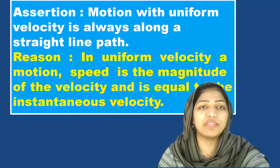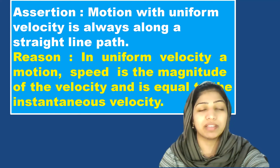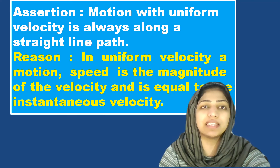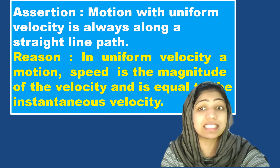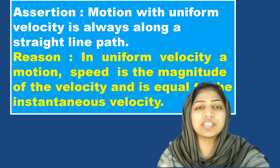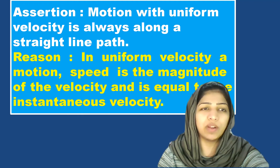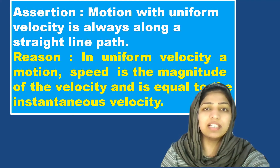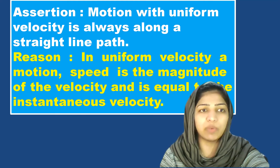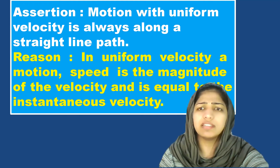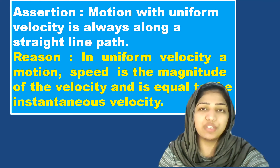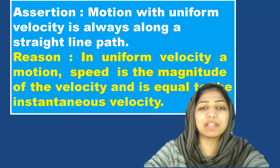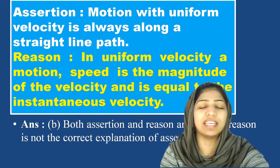Motion with uniform velocity is always along a straight line path. Uniform velocity means it will be along a straight line path. If you look at the direction, velocity will change and it becomes accelerated motion. Uniform velocity is true, so assertion statement is true. The reason is: in uniform velocity of motion, speed is the magnitude of velocity and is equal to the instantaneous velocity. There is a meaningful connection, so we choose option B.